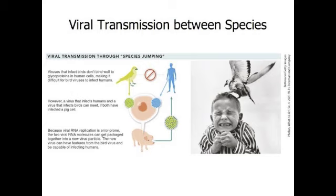Approximately 200 species of viruses can infect humans, and about 50 of those are capable of epidemic spreading. Viral diseases have been responsible for several worldwide pandemics. The influenza pandemic of 1918 to 1919 killed at least 20 million people and possibly as many as 50 million. In the current HIV-AIDS pandemic, more than 75 million people have been infected, with about 32 million deaths from AIDS. Close to 1 million people died of AIDS-related illnesses in 2018. Important distinction: AIDS is not a virus — HIV is the virus that causes AIDS. AIDS is the syndrome caused by the virus.